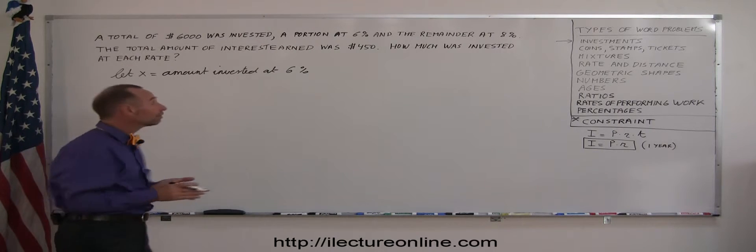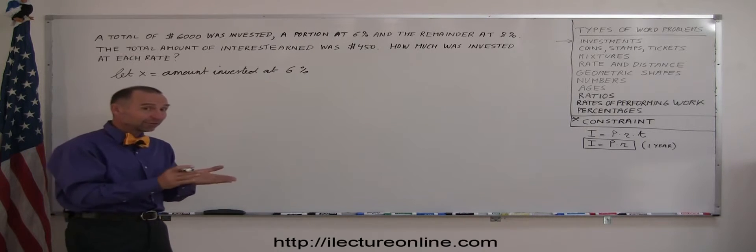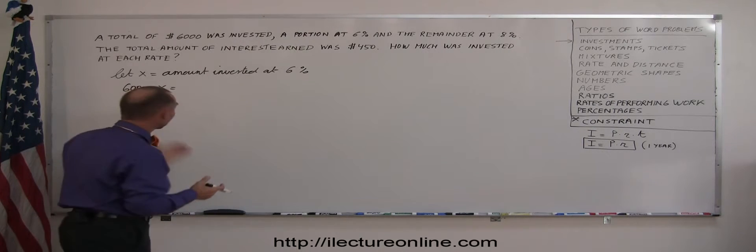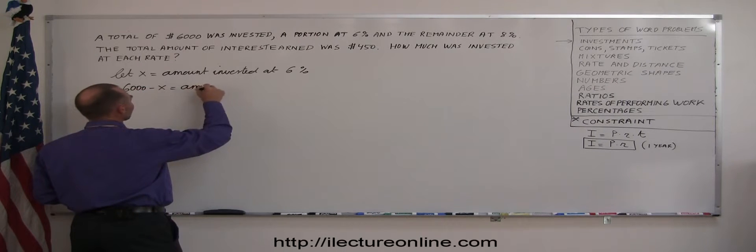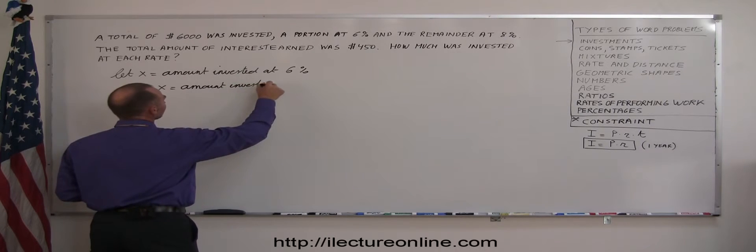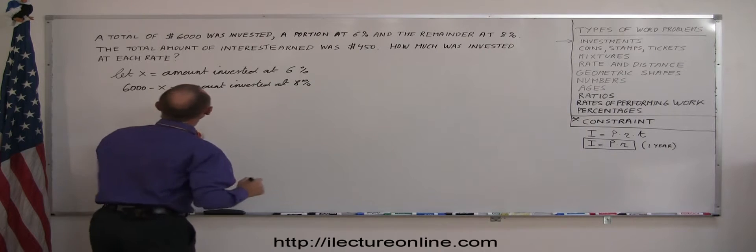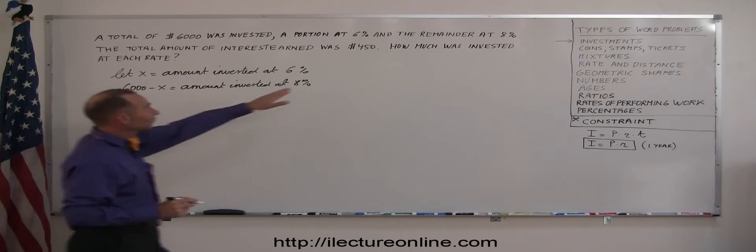Well, if the total was $6,000, and X was invested at 6%, then the difference, $6,000 minus X, is equal to the amount invested at 8%, right? $6,000 minus X is what's left over. So, that's the amount invested at 8%. Now, they tell us that we earned a total of $450.